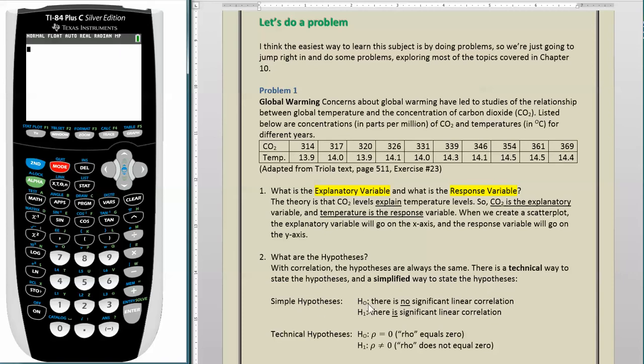Here is the simplified way. H0, or the null hypothesis, is simply that there is no significant linear correlation. H1 is that there is significant linear correlation. And here's the technical form of the hypotheses. H0, this thing that looks like a P, that's really a Greek letter called rho. Rho equals zero, that's the null hypothesis. Rho does not equal zero, that is the alternative hypothesis.